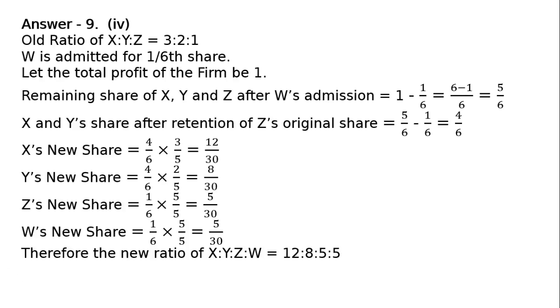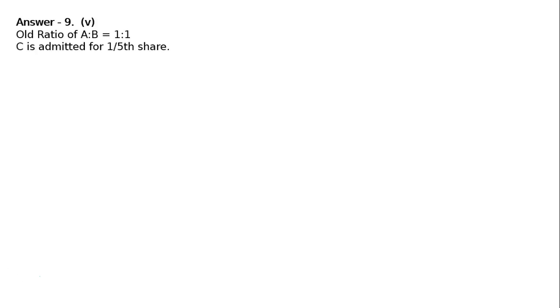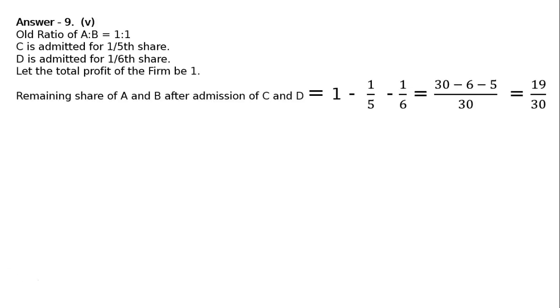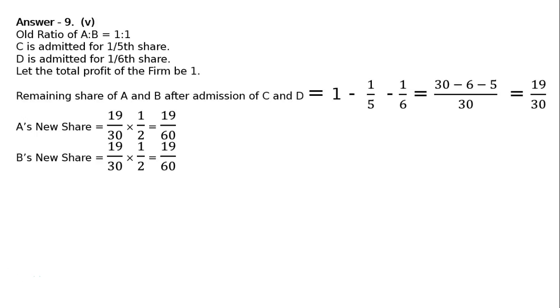Fifth part: A and B are equal partners. They admit C and D as partners with one-fifth and one-sixth share respectively. Old ratio of A to B is 1:1. C is admitted for one-fifth share, D is admitted for one-sixth share. Let total profit be 1. Remaining share of A and B after admission of C and D: 1 minus 1/5 minus 1/6. LCM 30: 30 minus 6 minus 5 equals 19/30. A's new share: 19/30 multiplied by 1/2 equals 19/60. B's new share: 19/30 multiplied by 1/2 equals 19/60.